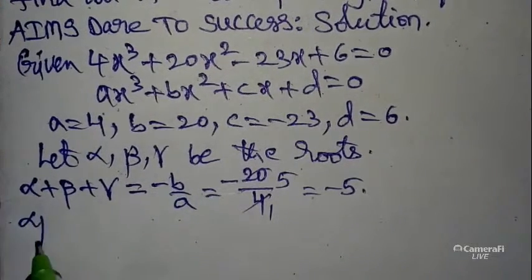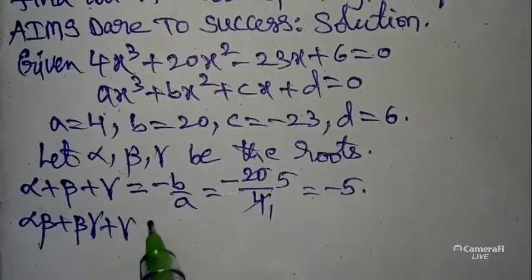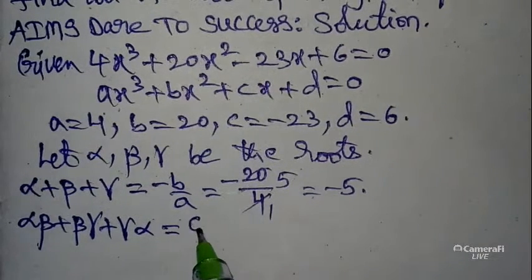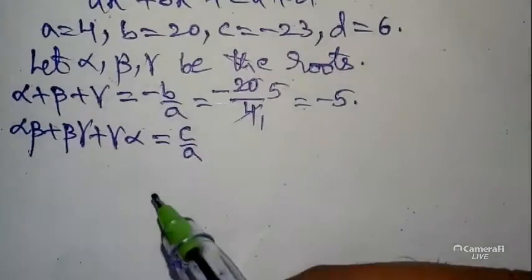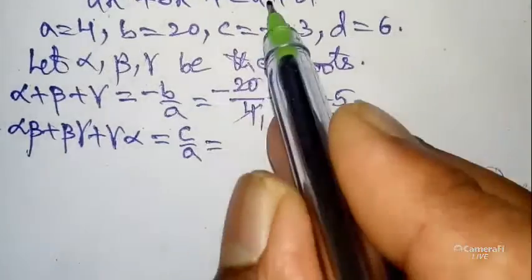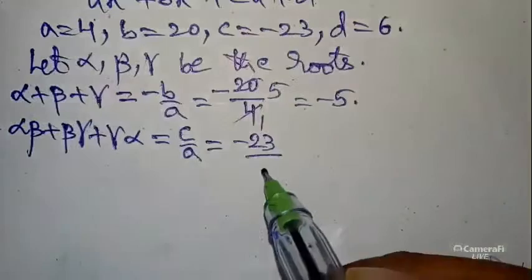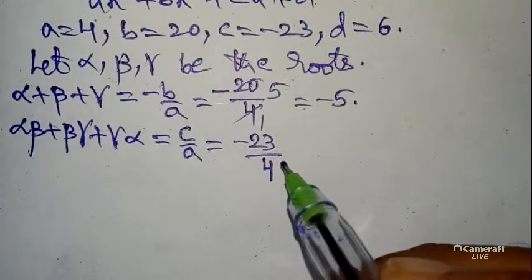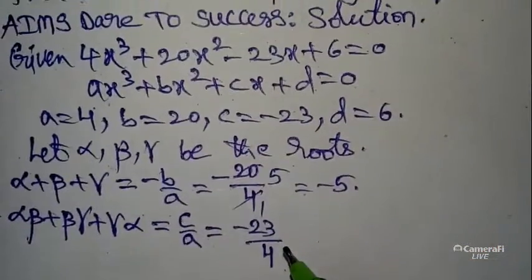The second formula: the sum of the product of the roots taken two at a time is alpha·beta + beta·gamma + gamma·alpha = c/a = -23/4. After getting these values, we check the condition given in the question — the two roots are equal.